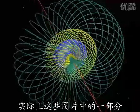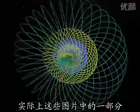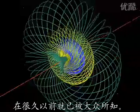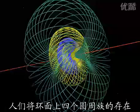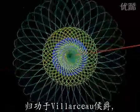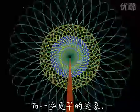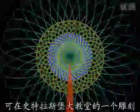To be honest, I have to say that some of these pictures were already known long before me. The existence of four families of circles on the torus is usually attributed to the Marquis de Villarceau, but one finds earlier clues in a sculpture in Strasbourg Cathedral, for instance.